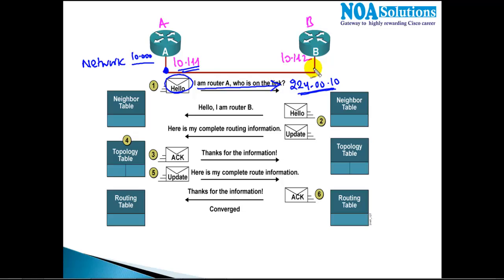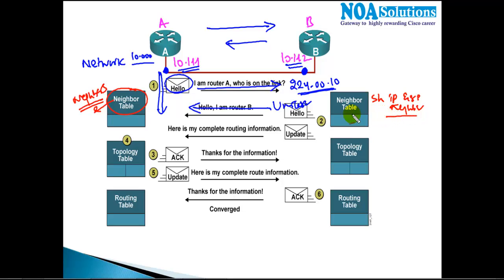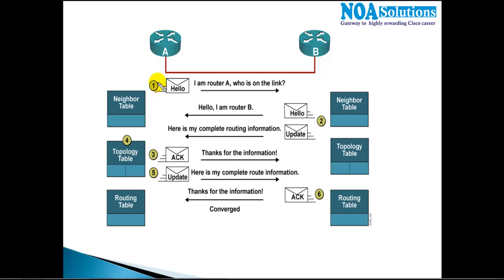If the other interface is not running EIGRP at that point, it doesn't understand those messages. But once you advertise that interface as well, it will receive the hello message and send a reply — again with a hello message saying: 'Hello, I'm 10.1.1.2 and I got your message.' The first step is that Router A sends a hello message on a multicast address and the reply comes as a unicast message. Based on these hello messages, they build a table called the neighbor table and become neighbors of each other. You can verify the neighbor table using the command 'show IP EIGRP neighbors'.